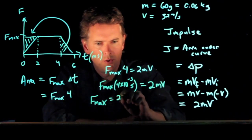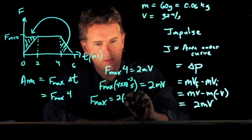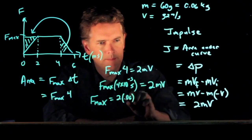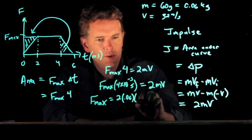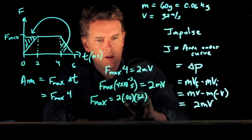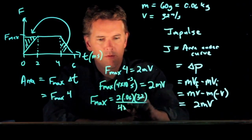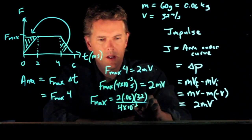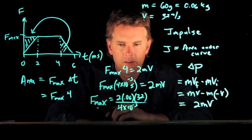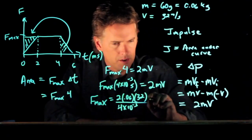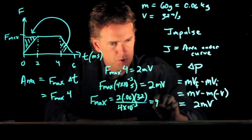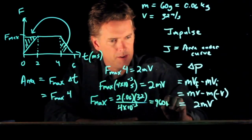We get 2 times the mass, which we said was 0.06. V was 32. And the bottom becomes 4 times 10 to the minus 3. And all this is SI units now. And if you plug those into your calculator, you should get 960 Newtons.